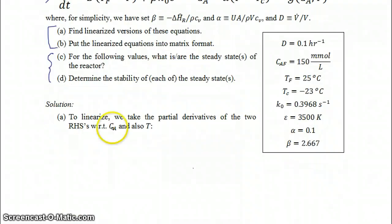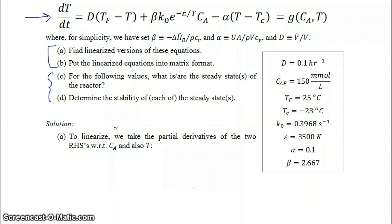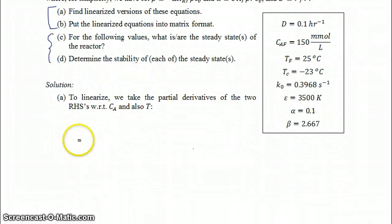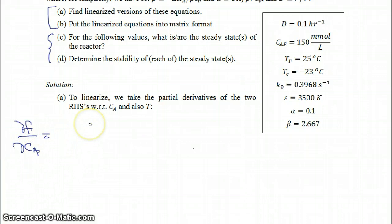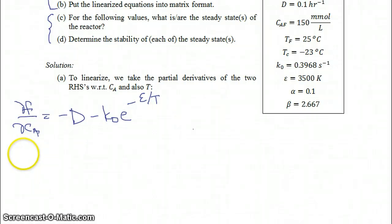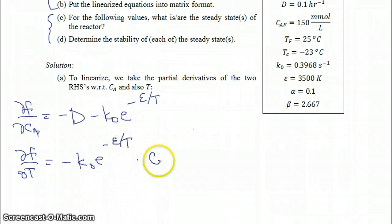To linearize, we're going to take the partial derivatives of the two right-hand sides of the equations with respect to both the concentration of A and also the temperature. I've defined these as functions F and G. The partial of F with respect to the concentration of A is equal to minus D minus K0·e^(−ε/T). The partial of F with respect to T is minus K0·e^(−ε/T) times the concentration of A times ε over T squared.